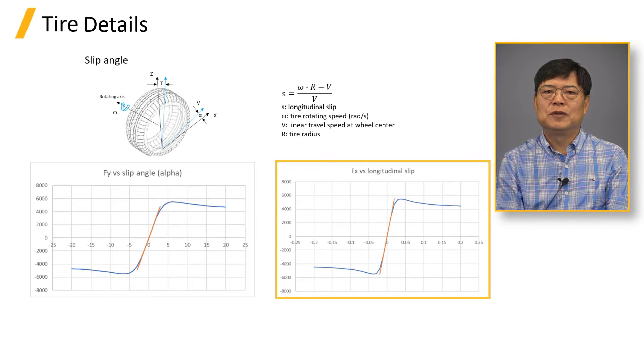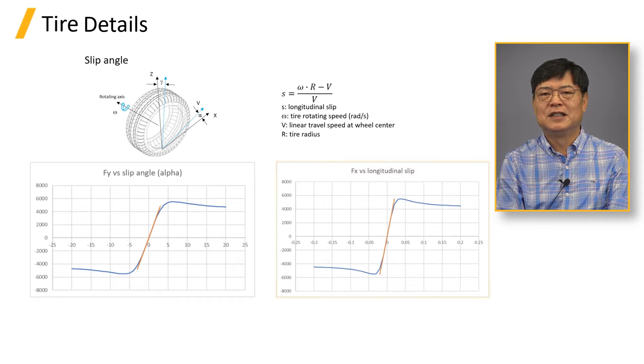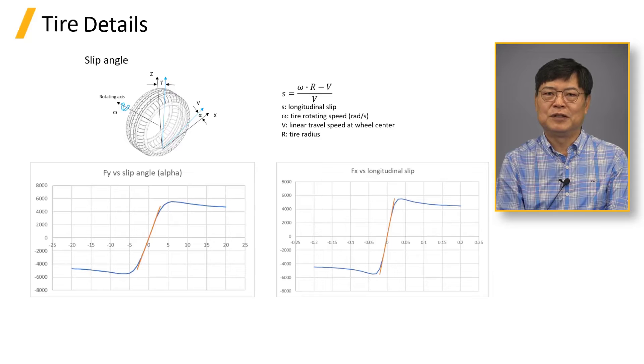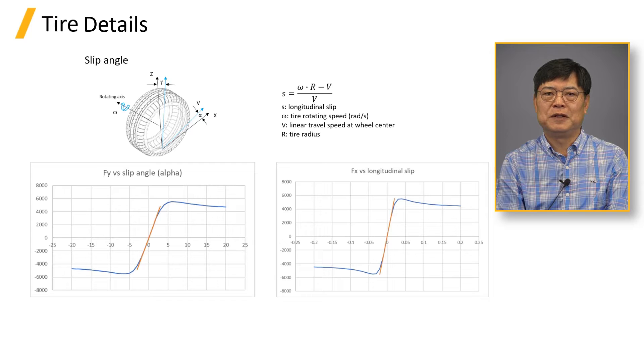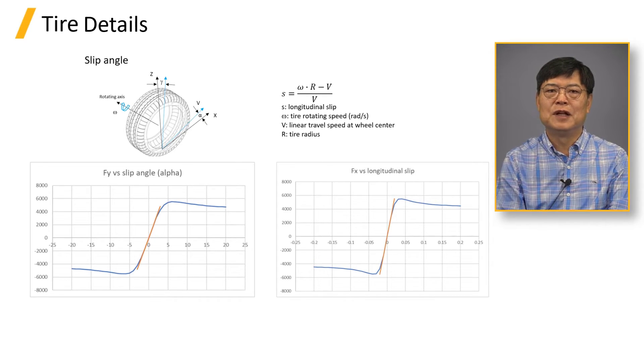Tire longitudinal force versus longitudinal slip is represented by the curve in the second plot. Longitudinal slip is a ratio of tire slip speed at the tire patch to the wheel travel speed. It shows a similar shape to the lateral force versus slip curve.